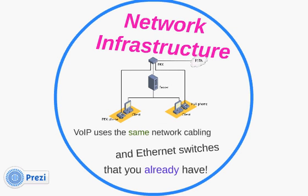VoIP uses the network infrastructure that you already have in place — the same network cabling and Ethernet switches. In the past, we would have two different network systems: one for data using Ethernet, and another cabling system for your telephone system. Now we have one system that we can use, and we call it convergence.